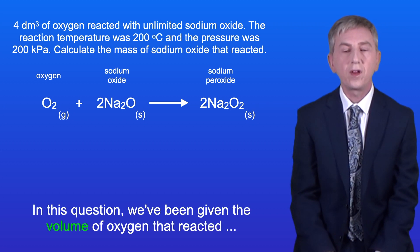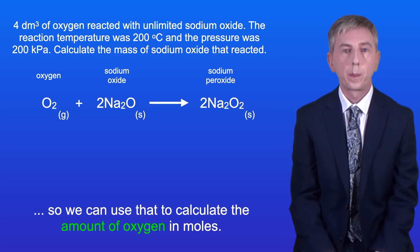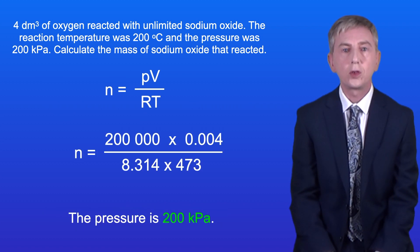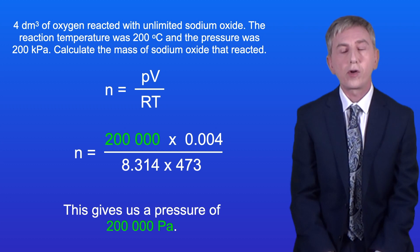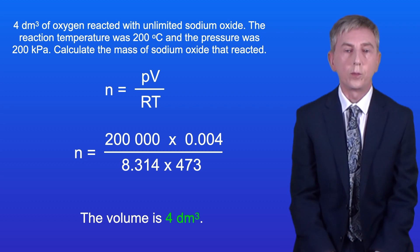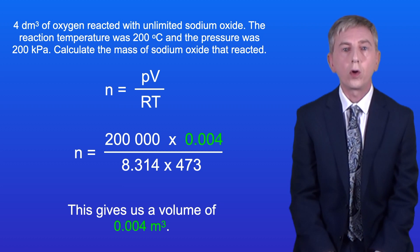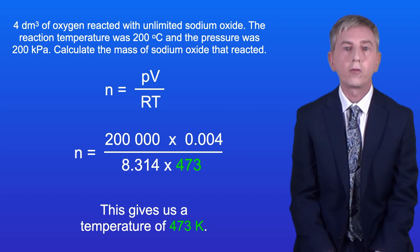In this question we've been given the volume of oxygen that reacted, so we can use that to calculate the amount of oxygen in moles. Here's the ideal gas equation rearranged for amount of substance. The pressure is 200 kilopascals — we need to convert this to pascals by multiplying by 1000, giving us 200,000 pascals. The volume is 4 decimetres cubed — to convert to metres cubed we divide by 1000, giving us 0.004 metres cubed. The temperature is 200 degrees Celsius — adding 273 gives us 473 kelvin.